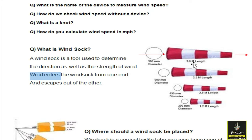There are different sizes available in the windsock: 3.6 meter length with 900 millimeter diameter of this circle, and 2.5 meter length with 600 millimeter diameter of the hole is available.